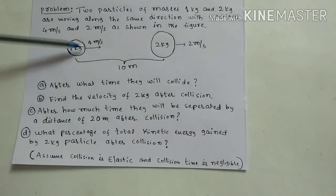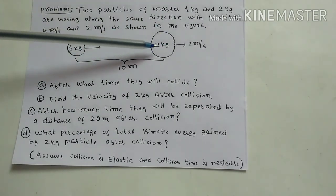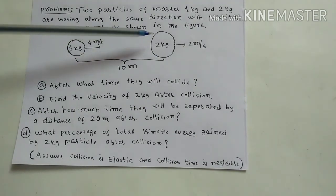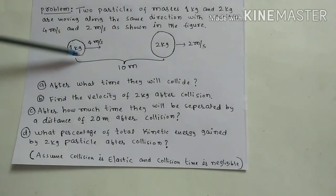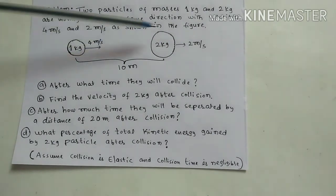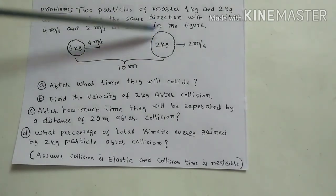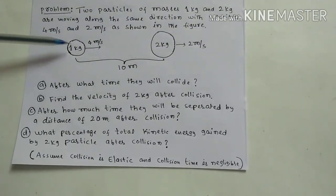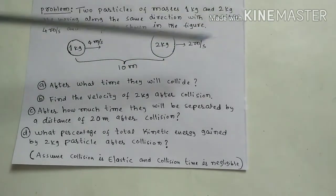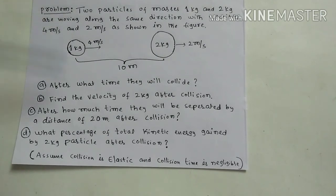The velocity of the first particle is 4 m/s, which is more than the second particle's 2 m/s, so after some time it will catch up and hit it — they will collide. After collision, they will separate. Initially they are approaching, and after collision they will separate. The 1 kg particle's velocity will reduce and the 2 kg particle's velocity will increase after the collision.